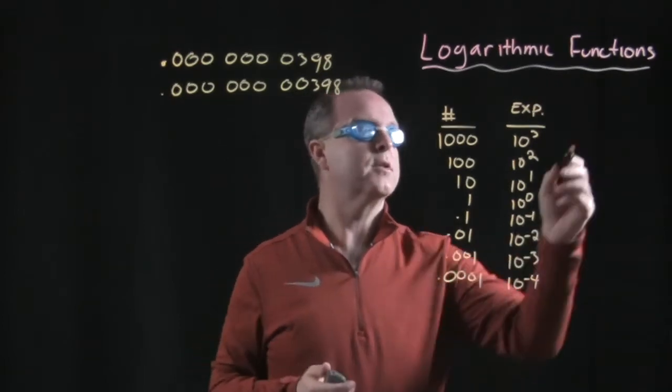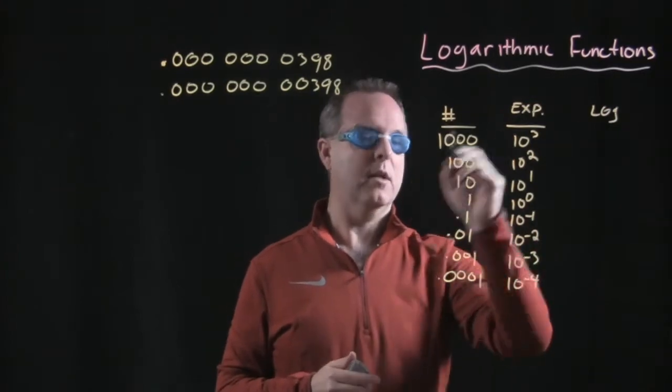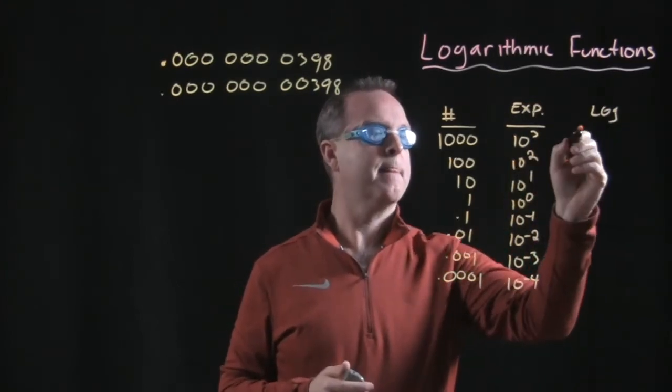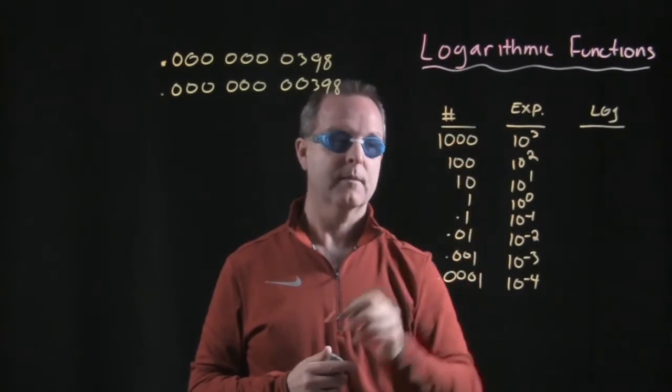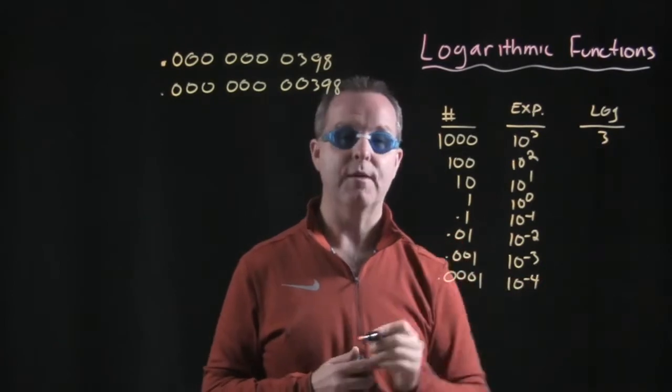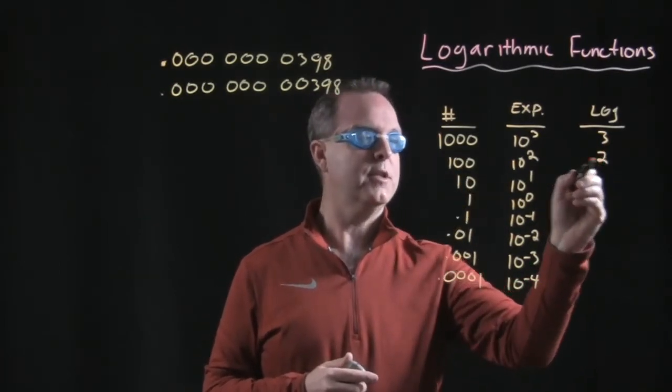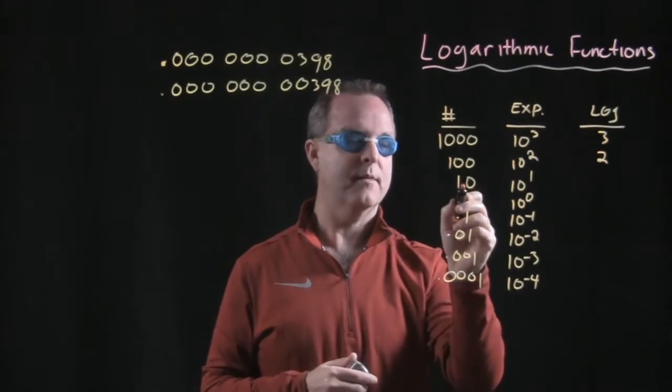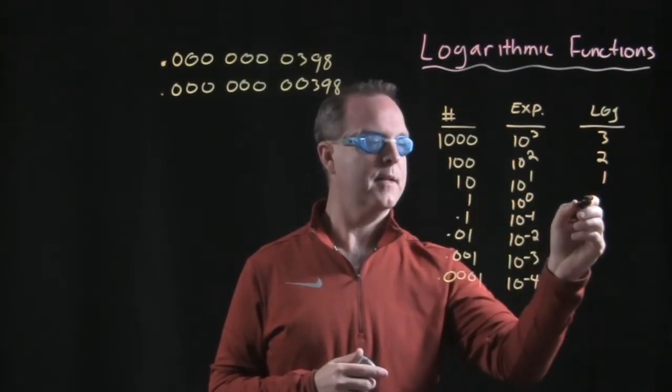Well, there's another way to write the number as well, and it's called the logarithmic function, or the logarithm of the number. And what would be the logarithm of 1,000, or the logarithm of 10 to the third? Well, the logarithm of that is just a three. The logarithm of 100 is just a two. Logarithm of 10 is a one. Logarithm of one is a zero.